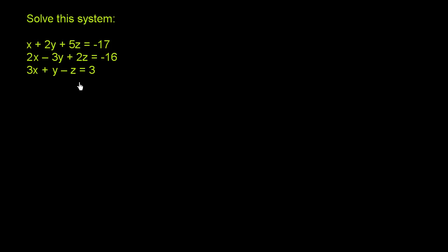To do this by elimination, if we want to eliminate variables, it looks like we have a negative z here, a plus 2z, and a 5z over here. If we scale up the third equation by positive 2, we'd have a negative 2z that cancels the 2z. If we scale it up by 5, we'd have a negative 5z that cancels the 5z. So let's try to eliminate the z's first.